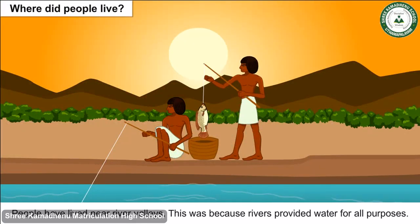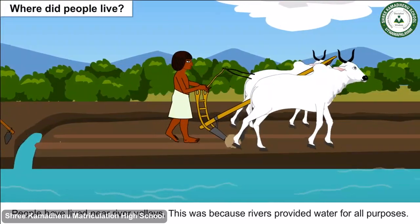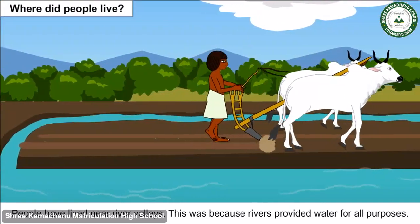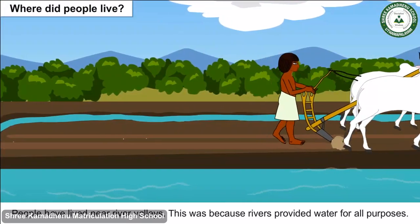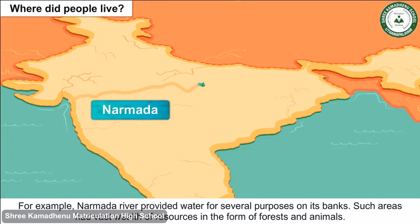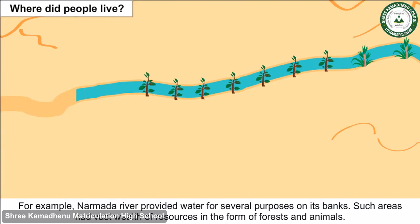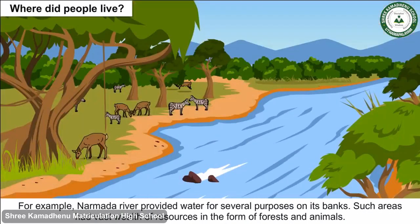Where did people live? People have lived near river valleys because rivers provided water for all purposes. For example, the Narmada River provided water for several purposes on its banks. Such areas had vast wealth of resources in the form of forests and animals.